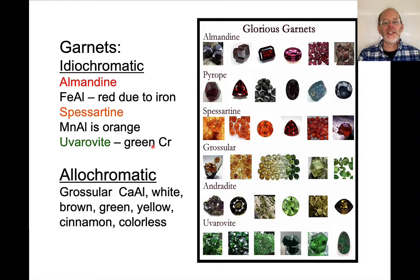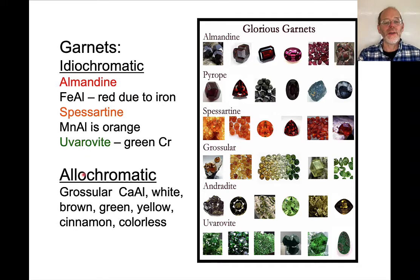Garnets are an interesting case — they can be both idiochromatic (almandine, spessartine, uvarovite, which is a calcium-chromium garnet) or allochromatic. If we take grossular, which is a calcium-aluminum garnet, in its pure form it's white. But if we add tiny amounts of other elements to it, the colors can shift to brown, green, yellow, or a cinnamon color.